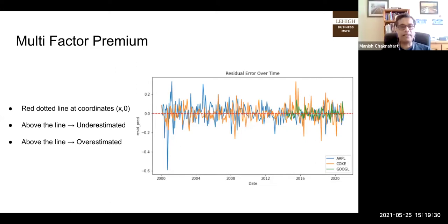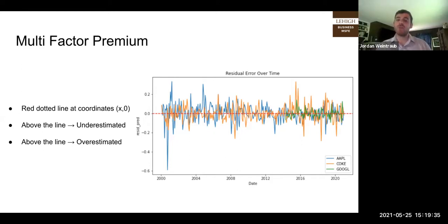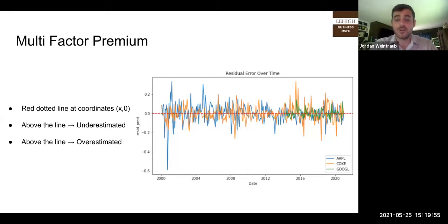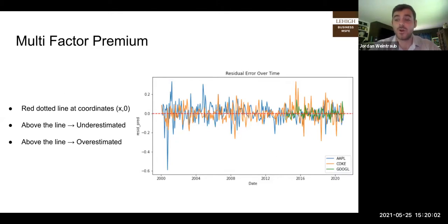Professor: You have spikes you can explain? Student: Yes, there's more variation at times of higher market volatility. Apple had some large variation from 2002 to 2003, but the biggest variation we've seen is Coke over time. For some reason, OLS predictions and multiple linear regression did struggle because it very much underpredicted Coke's returns, which we'll be able to show in about two graphs.